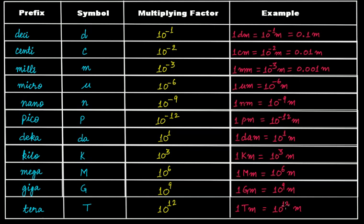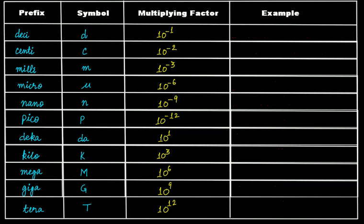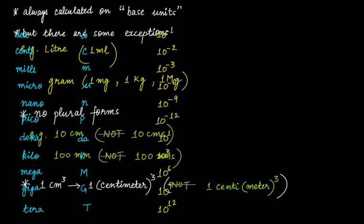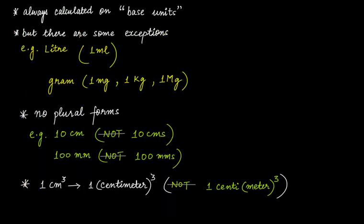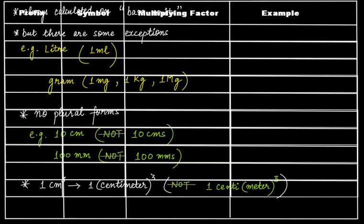What's the point here? The point is, these are all subsidiary units: 1 decimeter, 1 centimeter, 1 millimeter, 1 micrometer, 1 nanometer, 1 picometer, 1 decameter, 1 kilometer, 1 megameter, 1 gigameter, 1 terameter — these are all subsidiary units. And subsidiary units are calculated on base units, as we have seen here.